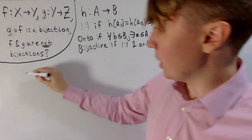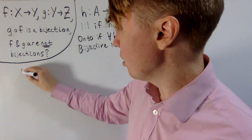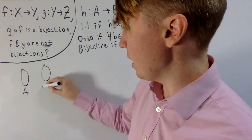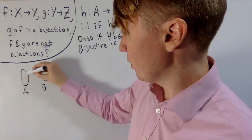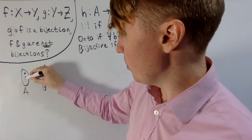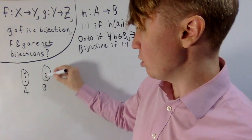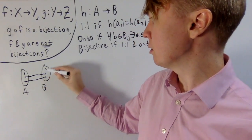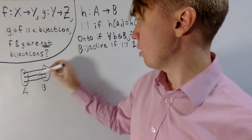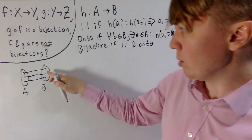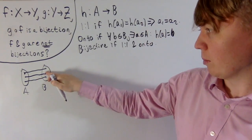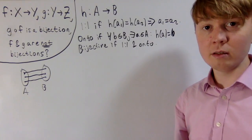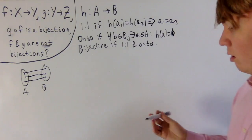So an intuitive picture for this: imagine you've got your set A and your set B. Basically every point in A goes to a unique point in B, and you can't have any leftover points in B that aren't filled up. So your intuitive picture looks just like this for a bijection.